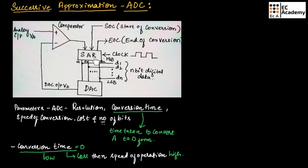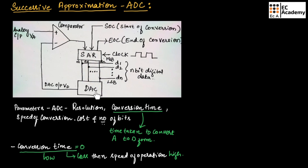This is the block diagram of successive approximation ADC. The SAR — successive approximation register — receives the output of the comparator, the start of conversion bit, and the clock signal as inputs. It provides the end of conversion signal as well as the digital output. The output of SAR is applied to a digital to analog converter, and the output of DAC, which is VD, is applied as one input to the comparator.